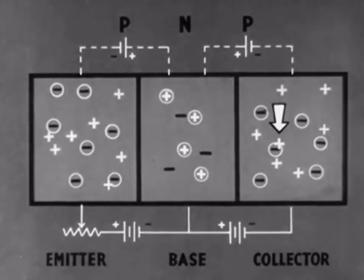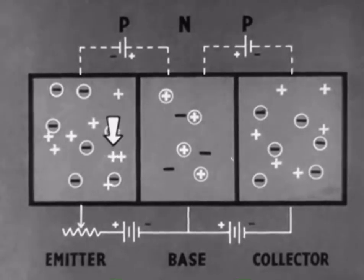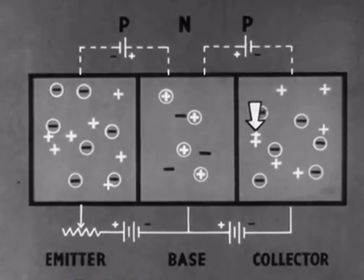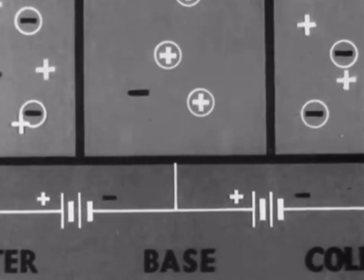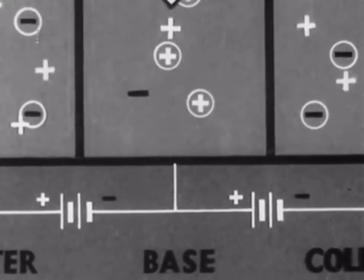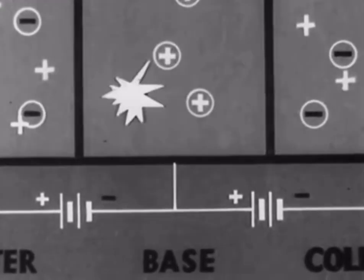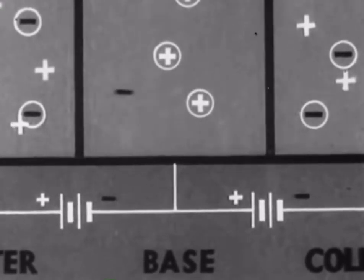Not all the positive holes from the emitter flow into the collector. Some of these remain in the base long enough to combine with free electrons there, and become neutralized. This gives rise to a small current of electrons flowing into the base to replace those used up in the neutralization process.